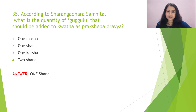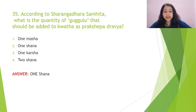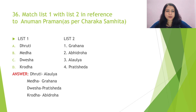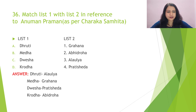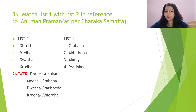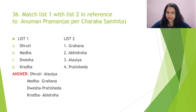Question 35: According to Sharangadhara Samhita, what is the quantity of guggulu that should be added to the kvada as a prakshepa dravya? The answer is vanshana. Question 36 involves matching list one with list two regarding anumana pramana. In list one: dhriti, medha, dvesha, and krodha. Dhriti is assessed by alaulyam; medha by grahana shakti (ability to grasp information); dvesha is assessed by pradvesha; krodha by abhidroha.